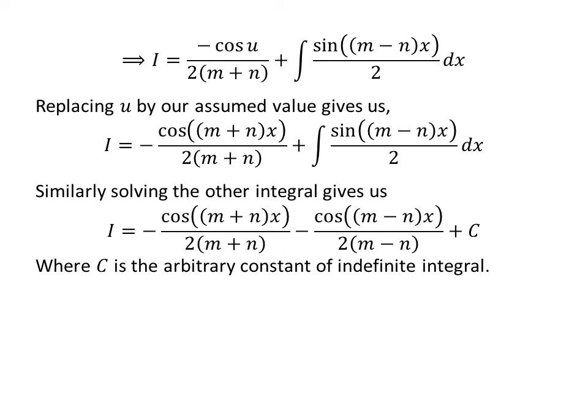Similarly, we can solve the integral of sine of (m minus n) times x upon 2 with respect to x. So we get I is equal to minus cosine of (m plus n) times x upon 2(m plus n), minus cosine of (m minus n) times x upon 2(m minus n), plus capital C. Capital C is the arbitrary constant of the indefinite integral — never forget to add this constant at the end.